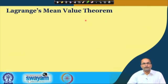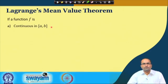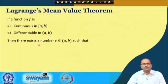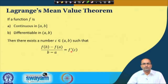Coming to the Lagrange mean value theorem: the function is continuous in the closed interval and differentiable in the open interval. The third condition where the function was equal at the two endpoints is not required here, making it more general and less restrictive. In this case, there exists at least one number c in the open interval such that [f(b) - f(a)] / (b - a) equals f'(c).